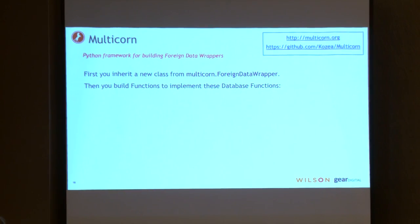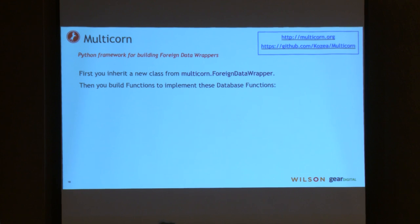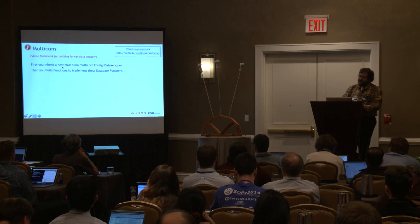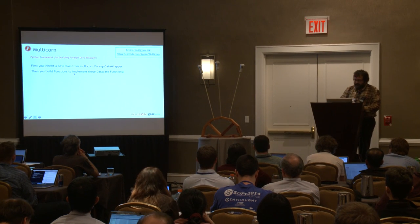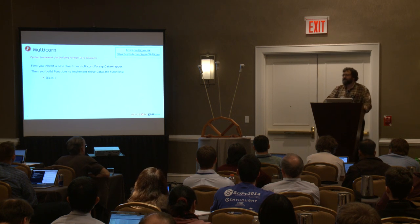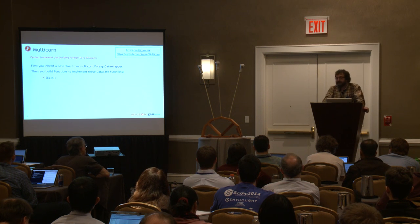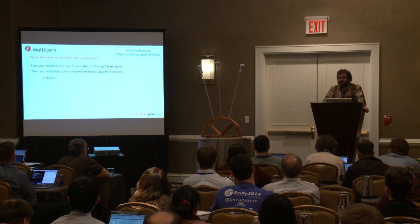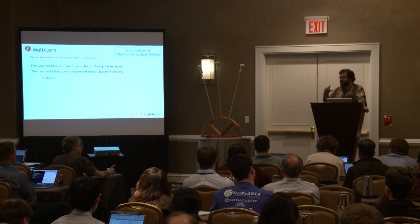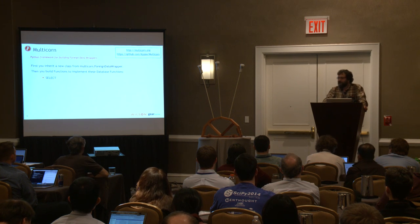Multicorn implementations work like this: you pull in Multicorn and inherit a new class from the ForeignDataWrapper class. Then you build your functions. The select — called execute in Multicorn — reads the state of your device and feeds it back into the table. If you start with this and build your execute, it's probably about 10 to 15 lines of code and you have a foreign data wrapper ready to go that can read the state of your device. Everything else is handled by Multicorn — it's like magic.